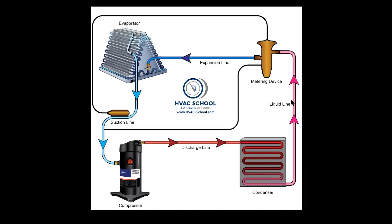It doesn't make sense to them: if you have a restriction here and you're measuring here on the liquid line, why on earth would your pressure here be lower than normal? And it comes down to a very simple principle.